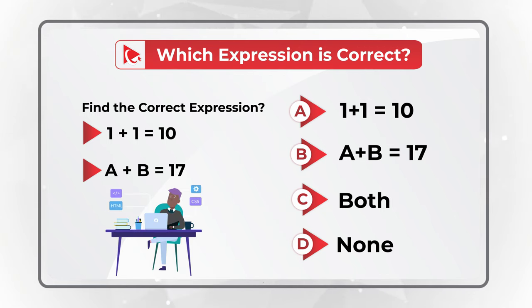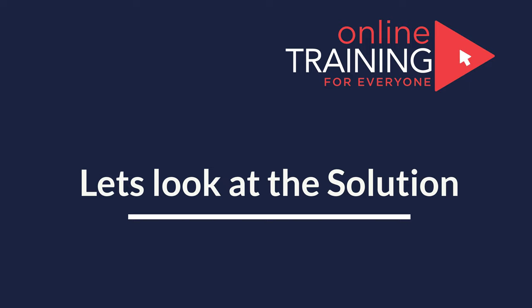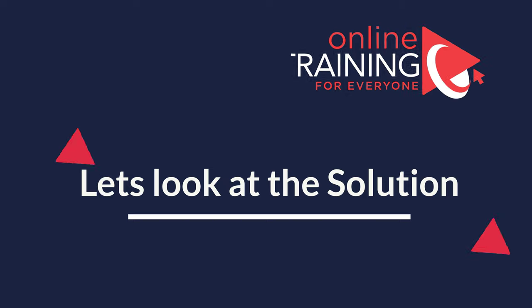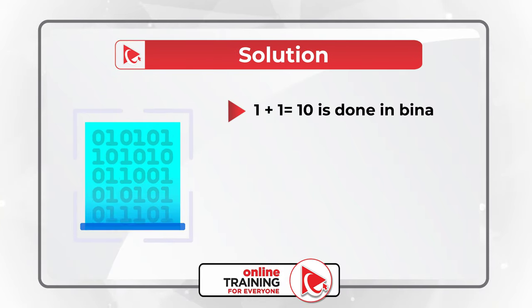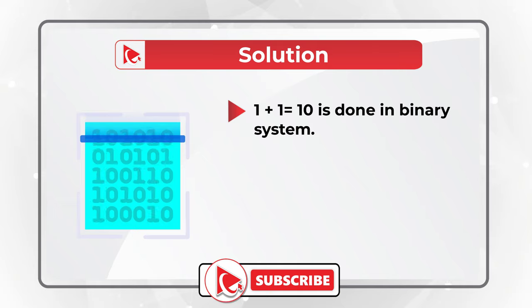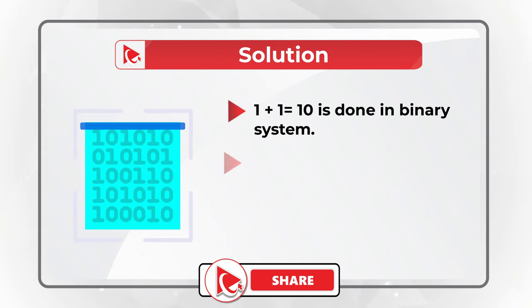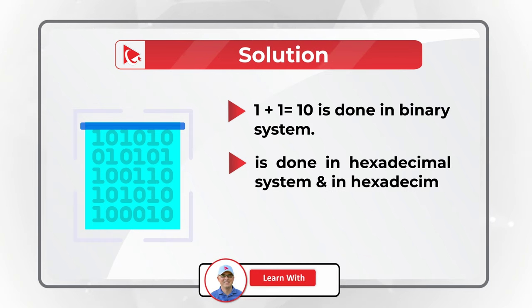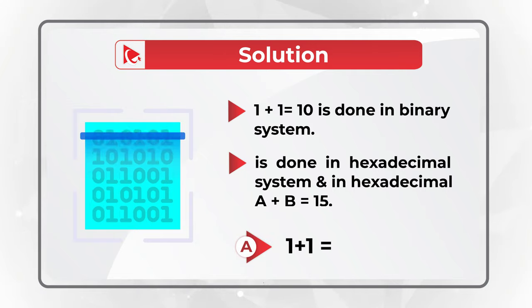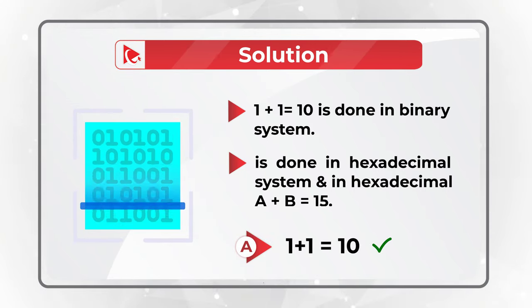The trick is that the first expression uses the binary system — in binary, 1 plus 1 equals 10. The second expression uses the hexadecimal system — in hexadecimal, A plus B equals 15, not 17. So the correct answer is choice A: 1 + 1 = 10.